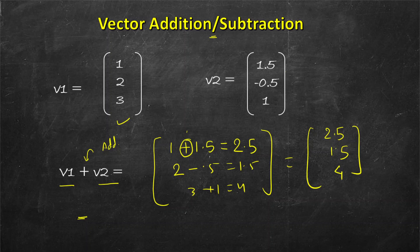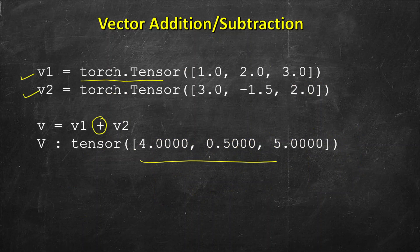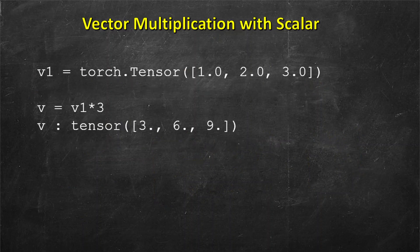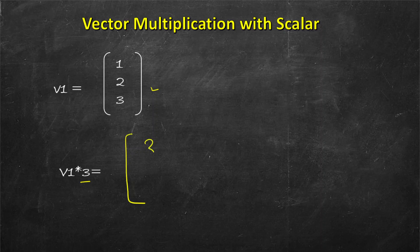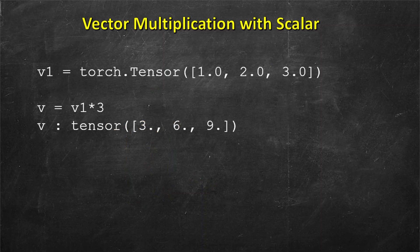Next, let's look at vector multiplication with a scalar. We have a vector 1, 2, 3 and if we multiply with a scalar 3, then all the elements are individually multiplied: 3 multiplied by 1 is 3, 3 multiplied by 2 is 6, and 3 multiplied by 3 is 9.